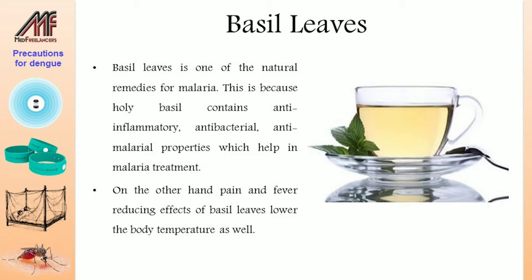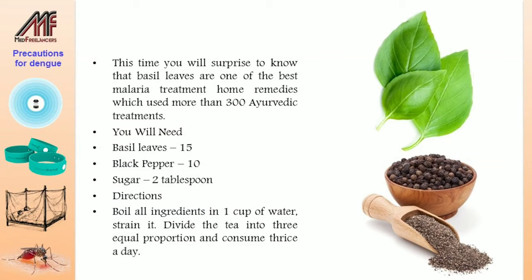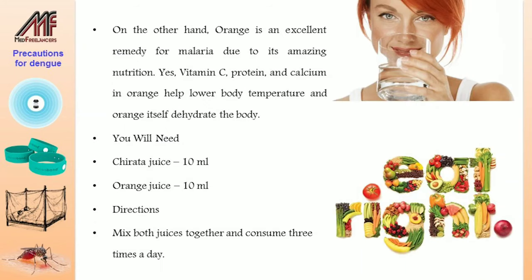Holy basil contains anti-inflammatory, antibacterial, and anti-malarial properties which help in malaria treatment. Its pain and fever reducing effects lower body temperature as well. Basil leaves are one of the best malaria treatment home remedies, used in more than 300 Ayurvedic treatments. You can make basil leaves tea as directed.